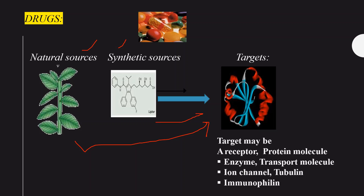Both natural and synthetic drug sources have a particular target and produce a biological response. Looking at the target — which is a protein — we see two types: a helical form and a loop form. The targets include receptors, which are protein molecules, enzymes, transport molecules, ion channels, and immunophilins. We need 3D knowledge of the target to design new molecules.